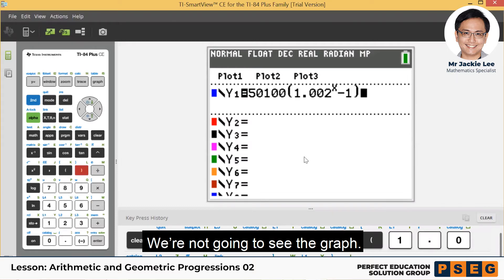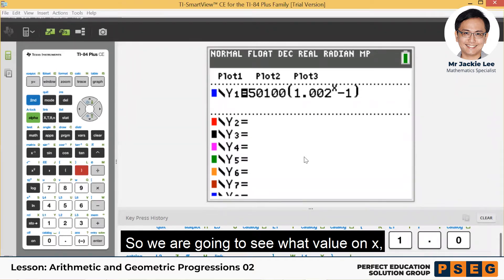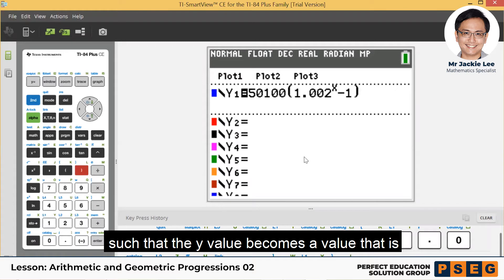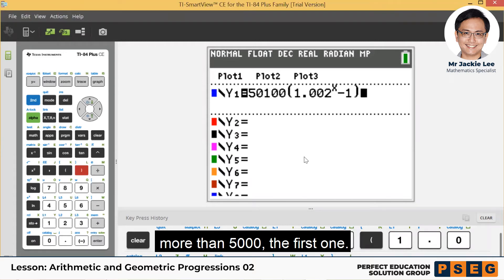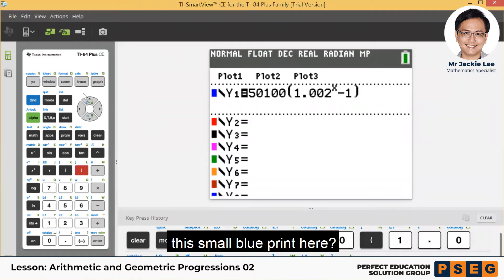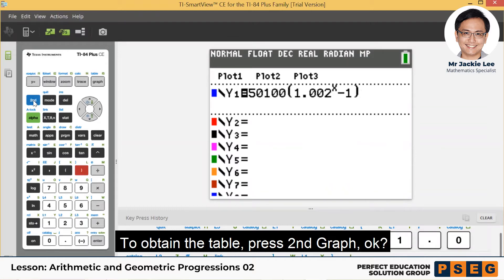We are not going to see the graph. We are going to generate a table. So we are going to see what value of x such that the y value becomes a value that is more than 5,000. To obtain the table, can you see here, this small blue pin here, table. You press second graph.